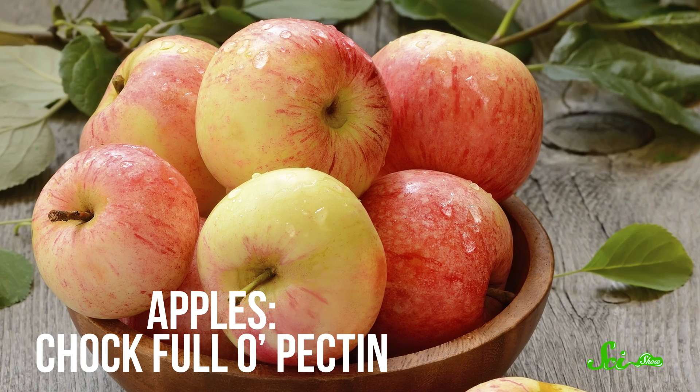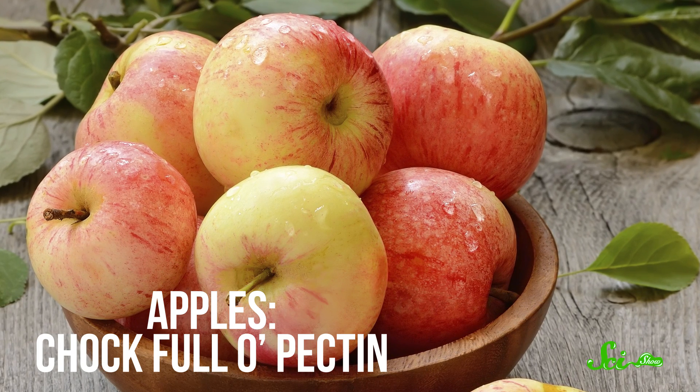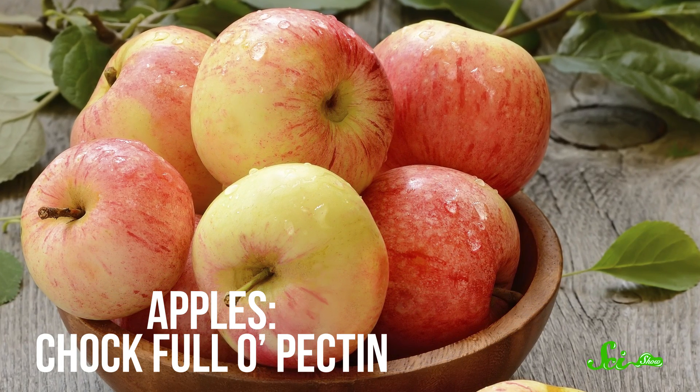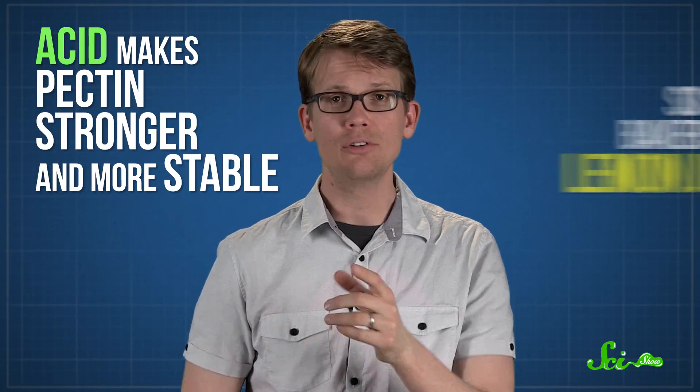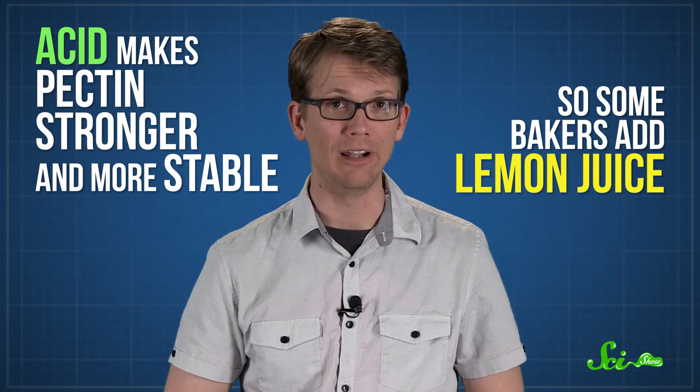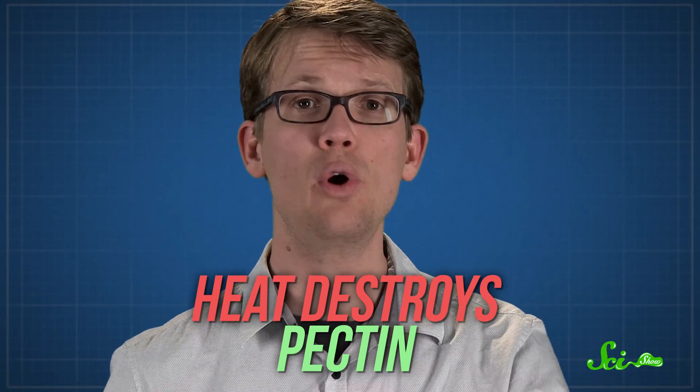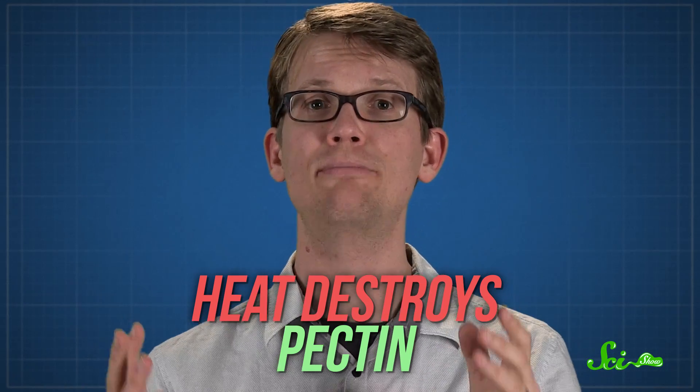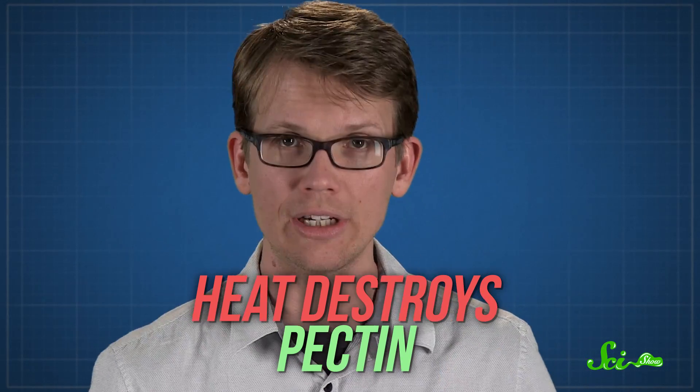For thicker pie filling, you can choose fruits that have more pectin naturally, like apples. You can even add an apple to a pie made with low-pectin fruits, like strawberries, for more thickening power. And a little acid will make pectin stronger and more stable, so some bakers add lemon juice to pie filling. However, heat destroys pectin, so even a pie with lots of pectin can turn to mush if you overcook it.